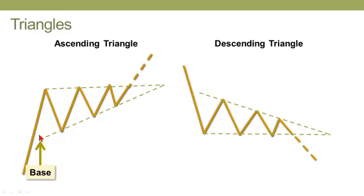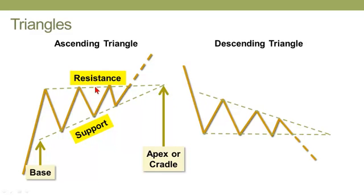We could call the base the distance between the horizontal resistance line and the lowest point on the local support line here. In the case of the ascending triangle, that support is not going to be horizontal, it's going to be upward sloping. And then we can call their intersection the apex or the cradle. So we have a support line here that's heading up, in the case of the ascending triangle, to meet with the horizontal resistance line.